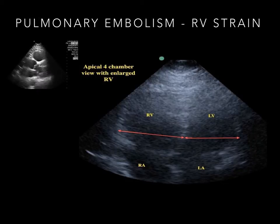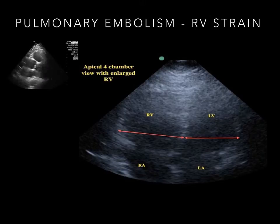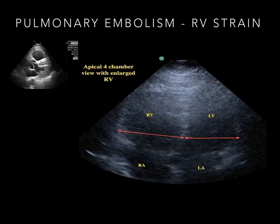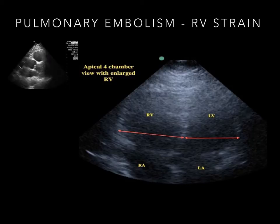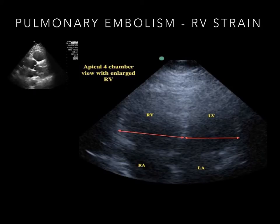Deep venous thrombosis may be visualized on ultrasound by the presence of an intraluminal clot and/or incomplete venous wall coaptation under pressure. ED bedside ultrasound detection of pulmonary embolism, however, is an indirect assessment — we may not simply assess the pulmonary vasculature using ultrasound. Rather, clinically significant pulmonary embolism is detected through ultrasound confirmation of right heart strain. Right ventricular enlargement, along with the D and McConnell signs, are ultrasonographic surrogates of right heart strain.